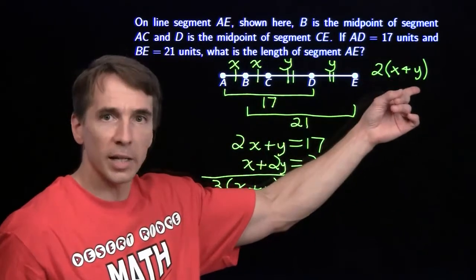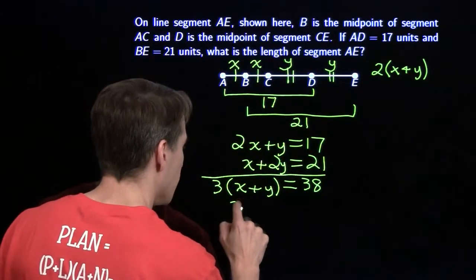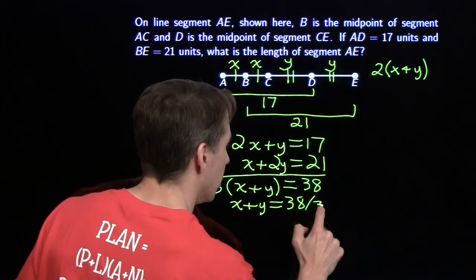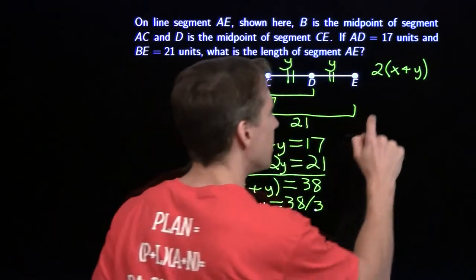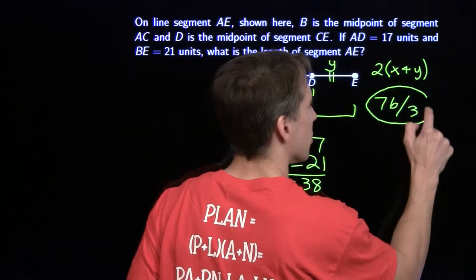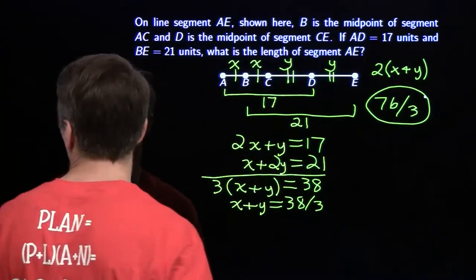All I care about is x plus y. I don't care what x and y actually are. So divide both sides by 3. I get x plus y is 38 thirds. And I just substitute this right in here. 2 times 38 thirds gives us 76 thirds as the solution. We've exploited symmetry to get the answer again.